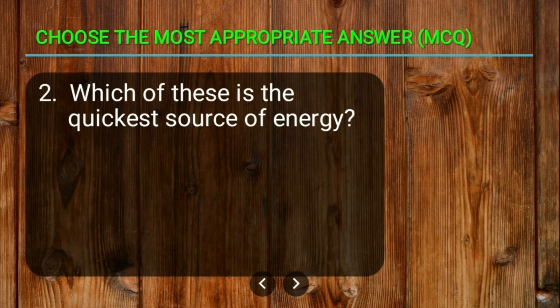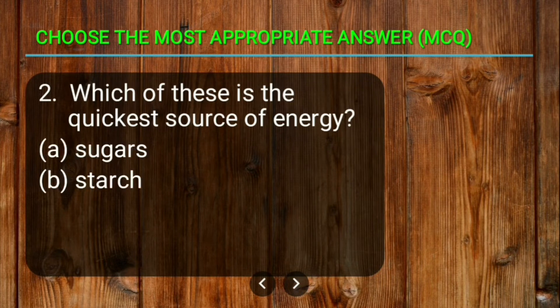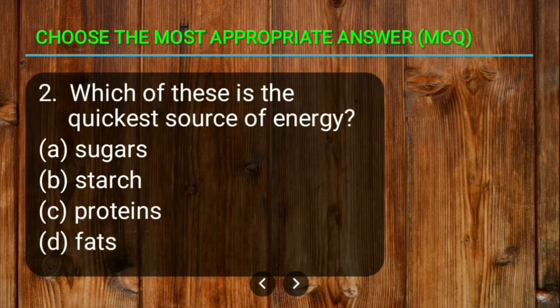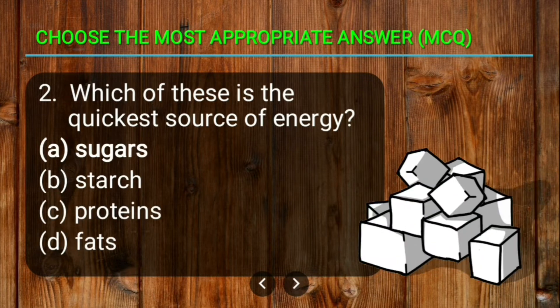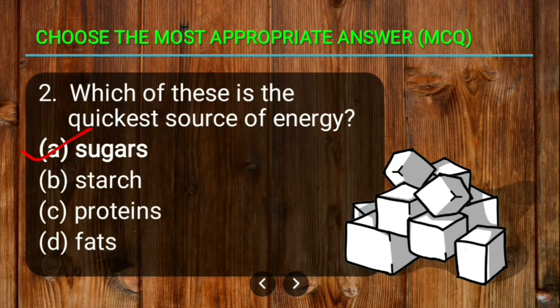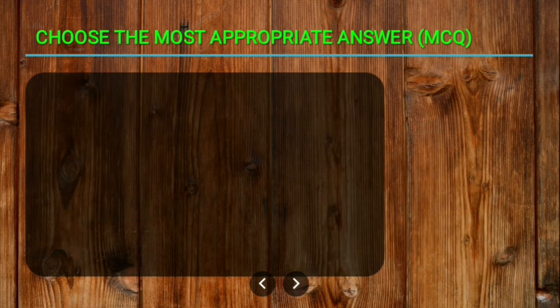Question number two: which of these is the quickest source of energy? The options are sugar, starch, proteins, and fats. The correct answer is sugar. Sugar is the quickest source of energy.